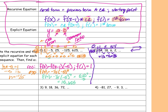My recursive equation: f(x) = f(x−1) · (1/3), and f(1) = 54. My explicit equation: f(x) = 162 · (1/3)^x.